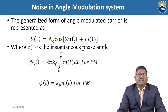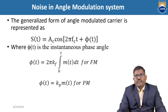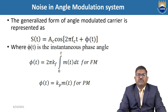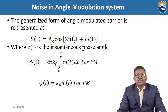In angle modulation, φ(t) has two varieties: frequency modulation and phase modulation. For FM, φ(t) = 2π·Kf·∫₀ᵗ m(t)dt, and for PM, φ(t) = Kp·m(t). Whichever angle modulation we take, we substitute that value. For example, for FM we take φ(t) = 2π·Kf·∫₀ᵗ m(t)dt.